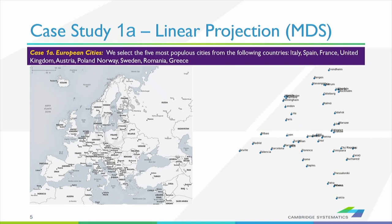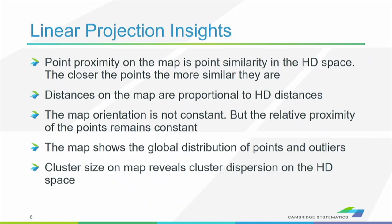I picked the five most popular cities from a number of European countries, calculated the distances between all those cities, and then used a linear method called multidimensional scaling to project those cities onto a plane. On the left-hand side you see the actual map; on the right-hand side you see what the multidimensional projection did. More or less, it projected the points where they should be and maintained the distances between the cities. It may not be as accurate as the left one, but it's good enough and helps you understand the global distribution of the points.